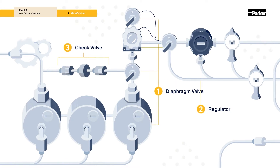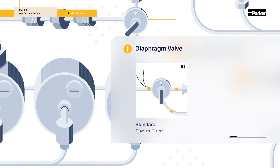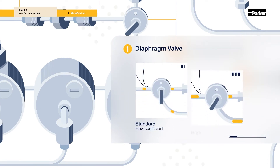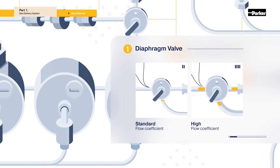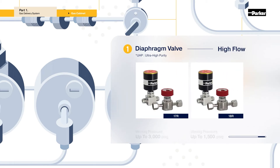The diaphragm valve, which is used in the gas supply system, depends on the supplied amount of gas. It is classified into high and standard flow capacity, and there are differences in the types of products. For standard flow capacity, 930 and 945 diaphragm valves are used. And for high flow capacity, 17R and 18R valves are used.